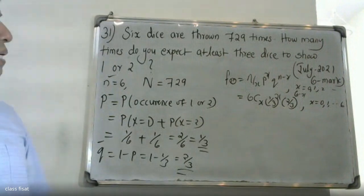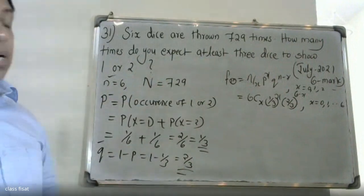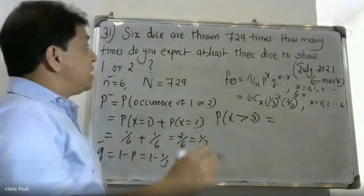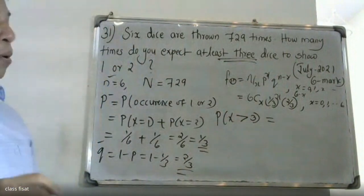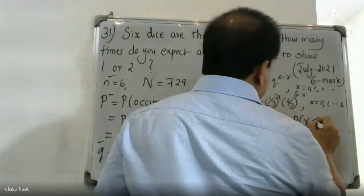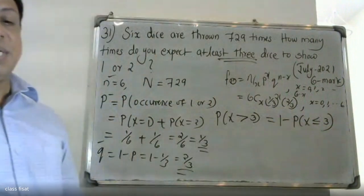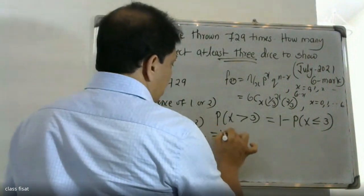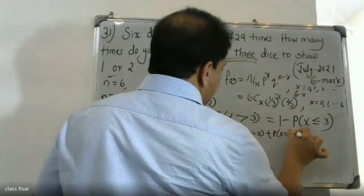In the binomial distribution, how many times do we expect at least three dice to show 1 or 2? We need P(X ≥ 3). Using the complement rule, P(X ≥ 3) equals 1 minus P(X ≤ 2), which is 1 minus P(X ≤ 3).